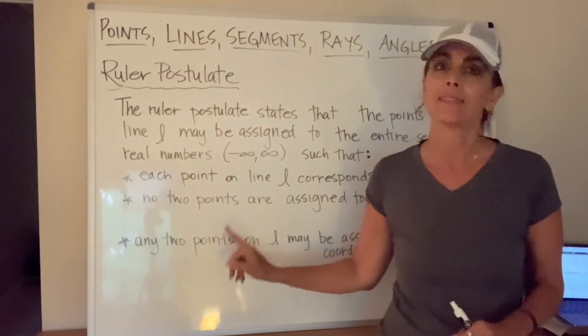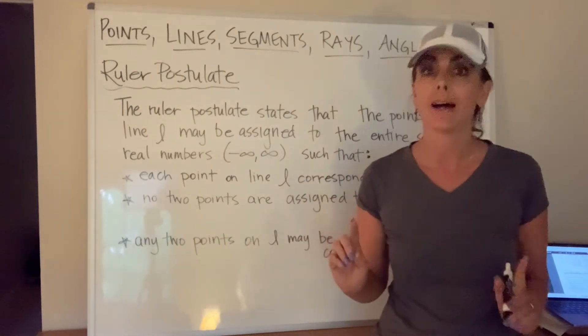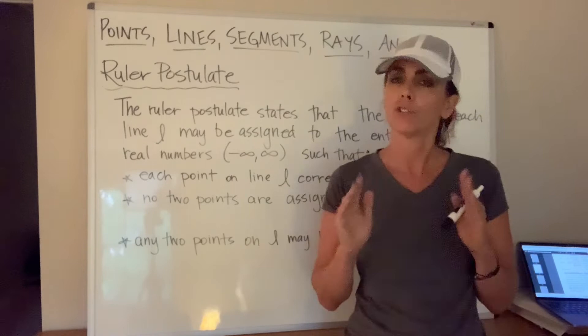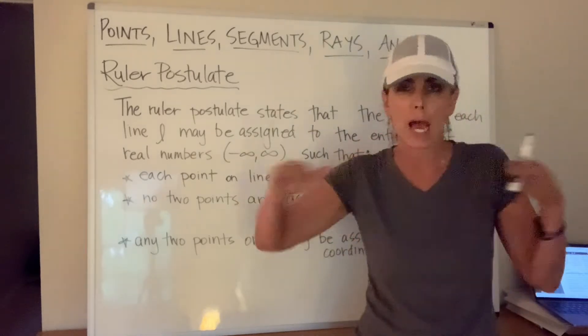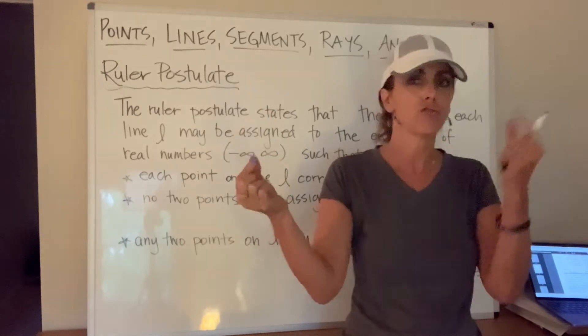Any two points on the line may be assigned to the coordinate of zero and a positive value. Just think about if you assigned a line to correspond with all the real numbers and you chose two points,